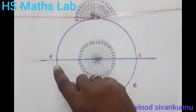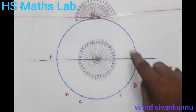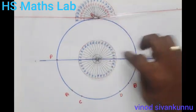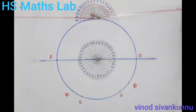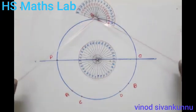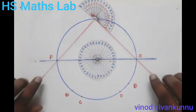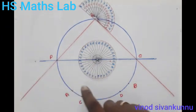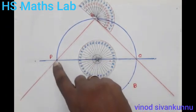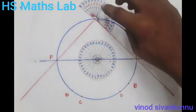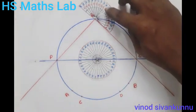We join two lines from P and Q to R. R is a point on the arc. We join two lines from P to R and Q to R, and we get the angle PRQ.